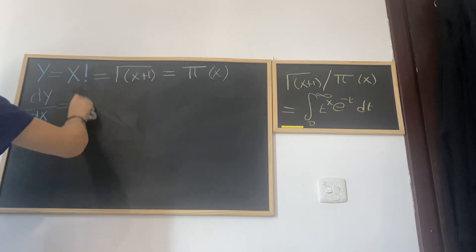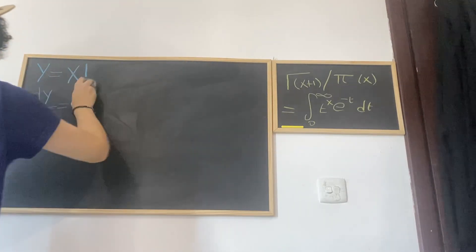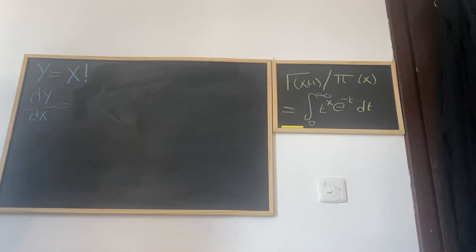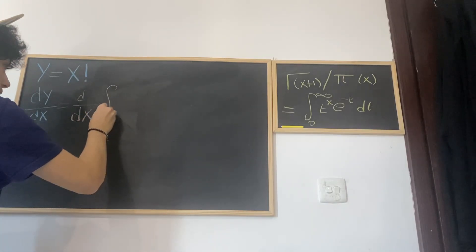Okay, so dy/dx is equal to d/dx of this integral from 0 to infinity of t^x multiplied by e^(-t) dt.